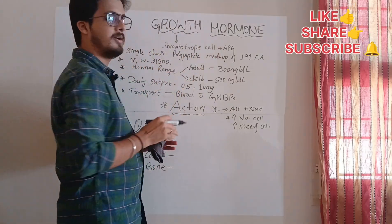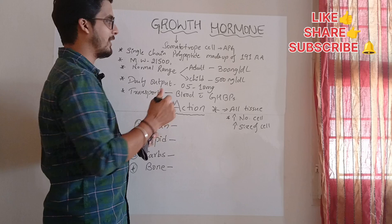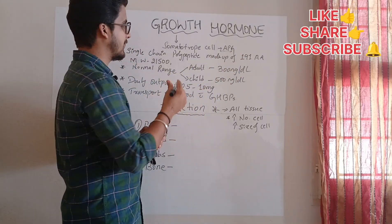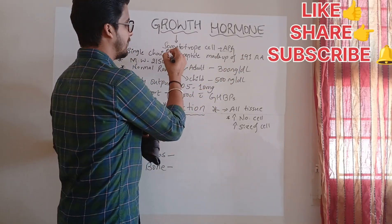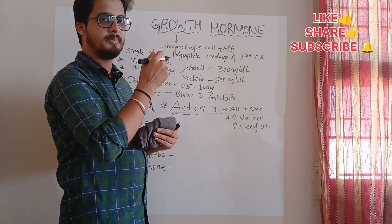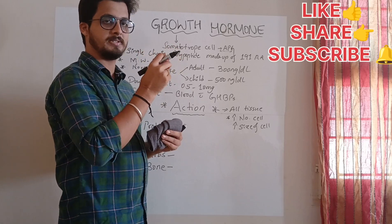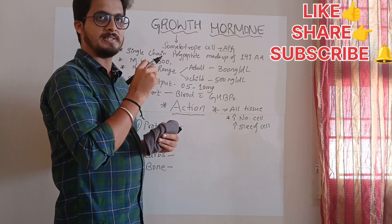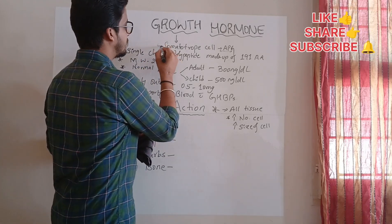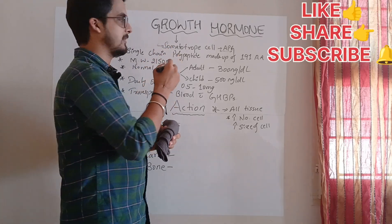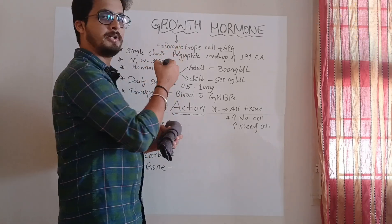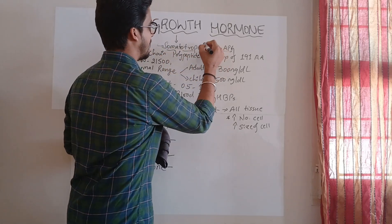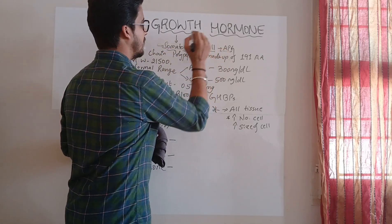Growth hormone is the hormone from the anterior pituitary gland. Growth hormone is secreted from the anterior pituitary gland. There are two types of cells: chromophobic cells and chromophilic cells. The somatotrope cell is in the anterior pituitary gland, and the somatotrope cell is responsible for the secretion of growth hormone.